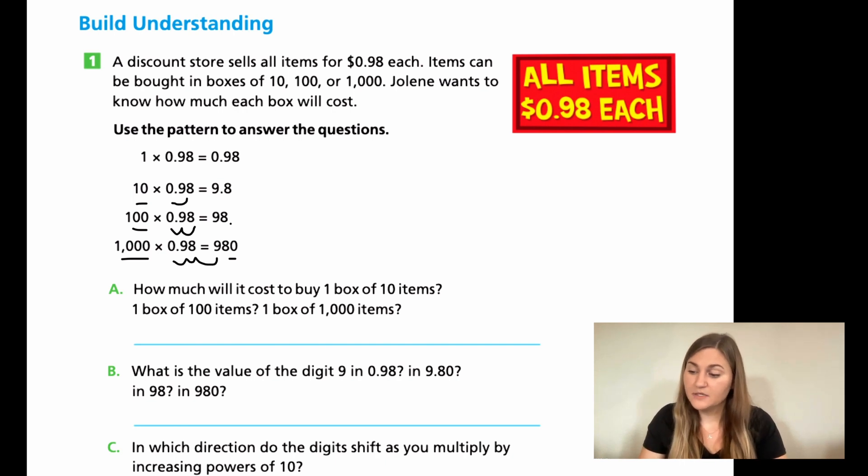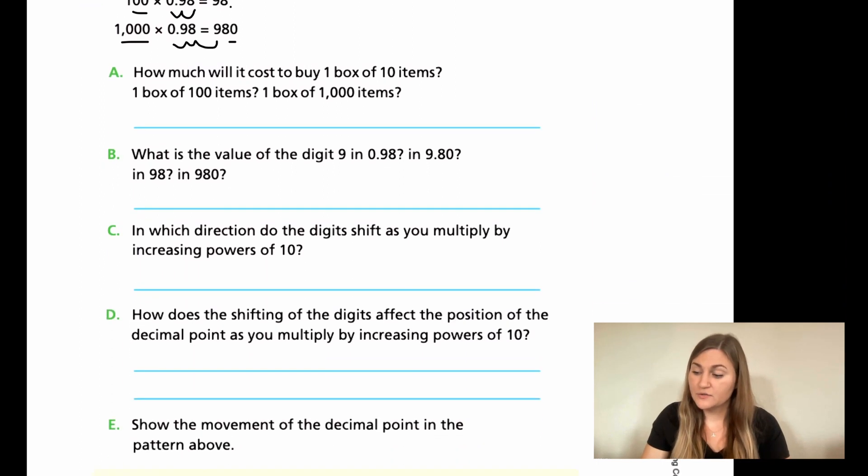Alright. For A, it says, how much will it cost to buy one box of 10 items? So you're just writing down the cost in dollars and it gives it to you up above. So this one shouldn't be too tough for you. For B, now it wants to know the place value of the nine in each of these numbers. So what's the place value of the nine in 0.98? What's the value of the nine in 9.80? So you're writing the place values for B. C, in which direction do the digits shift? So remember, which way are the digits going? And then for D, it's asking the same question, but it's asking the position of the decimal point. So which way are the digits going? Which way is the decimal point going? And then for E, show the movement of the decimal point in the pattern above. Lucky you, I already did it. So you get to just copy what I did for E. Alright, go ahead and solve these few problems. Come back and we'll do it together. Go ahead and hit pause here.